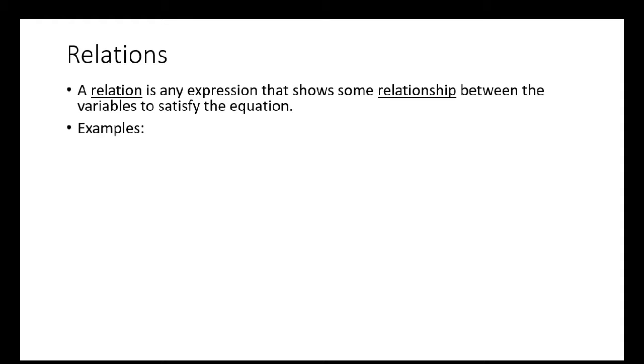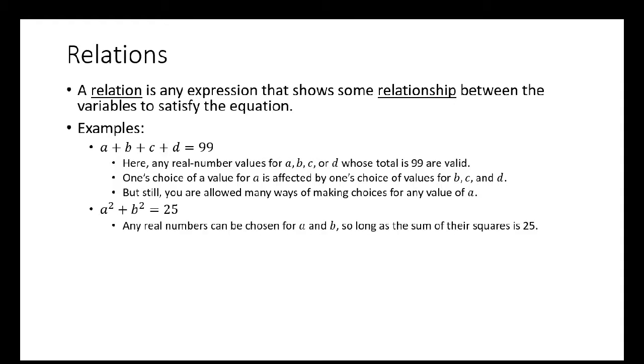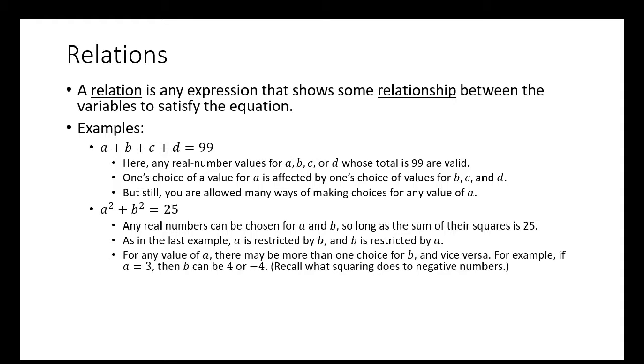Here are some examples. For this example, any real numbered values a, b, c, or d whose total is 99 are valid. One's choice of a value of a is affected by one's choice for b, c, or d, but you're still allowed many ways of making choices for any value of a. For a² + b² = 25, any real numbers chosen for a and b are okay so long as the sum of the squares is 25. As in the last example, a is restricted by b and b is restricted by a. For any value in a, there may be more than one choice of b and vice versa. For example, if a equals 3, then b can be 4 or minus 4. Recall what squaring does to negative numbers.